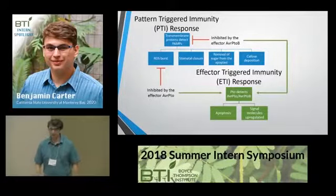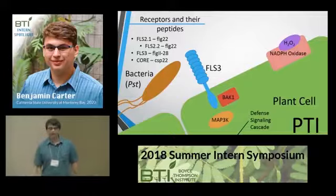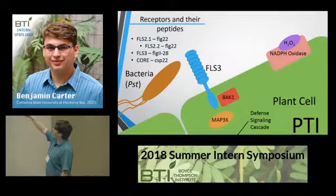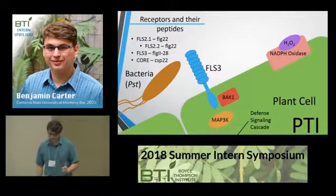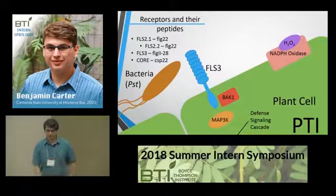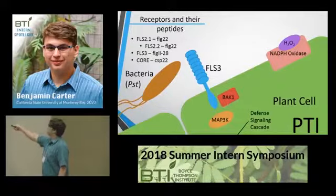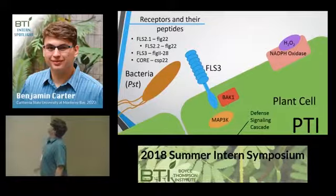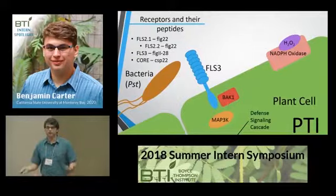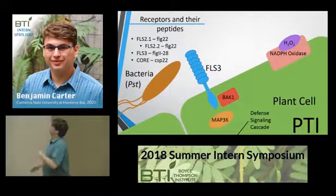This is an example of PTI using the protein FLS3. The leucine-rich repeat region of the protein detects the flg28 peptide of the bacteria's flagellum. This triggers a few proteins: MAP3K, which goes on to activate a defense signaling cascade, and BAC1, which goes on to activate NADPH oxidases, which then produce reactive oxygen species, or ROS, such as hydrogen peroxide. Reactive oxygen species both act directly on the pathogen and also signal other defense reactions.